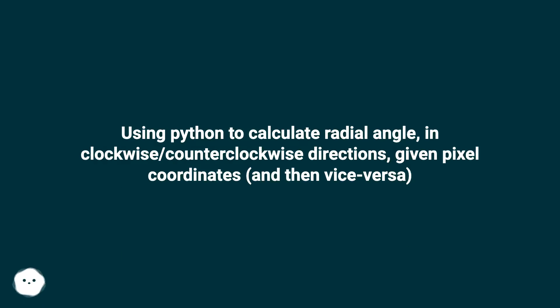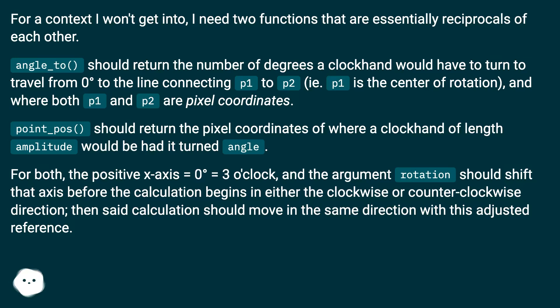Using Python to calculate radial angle in clockwise and counterclockwise directions given pixel coordinates, and then vice versa. For context I won't get into, I need two functions that are essentially reciprocals of each other. angle_to() should return the number of degrees a clock hand would have to turn to travel from zero degrees to the line connecting p1 to p2.